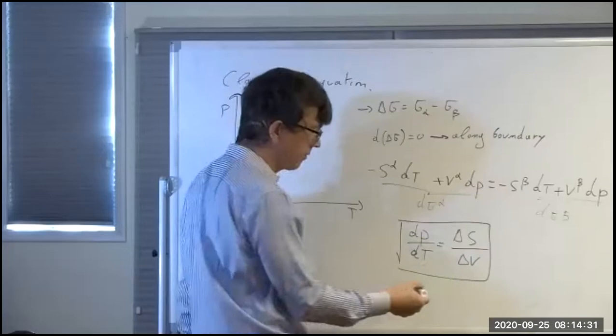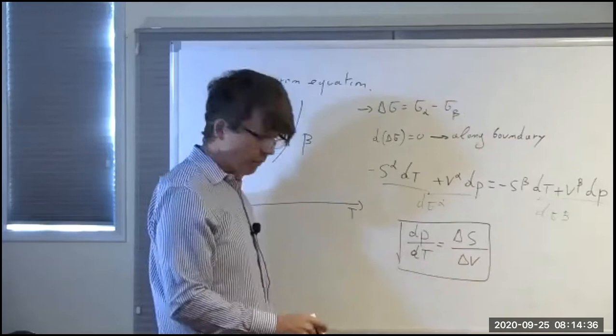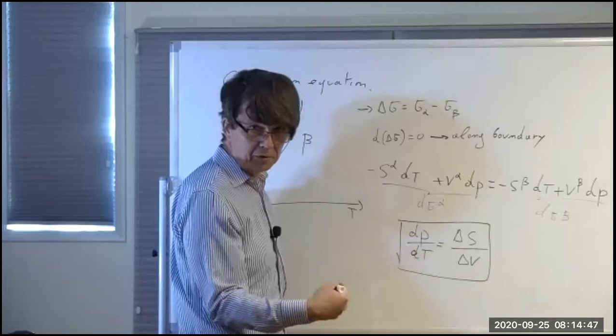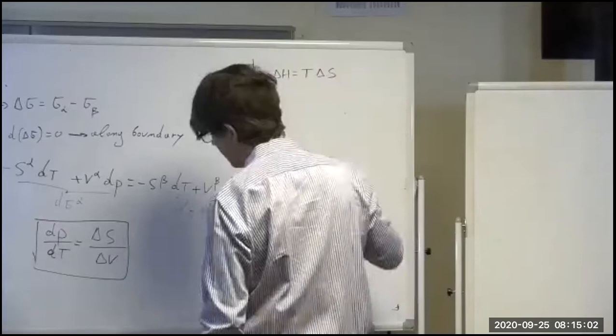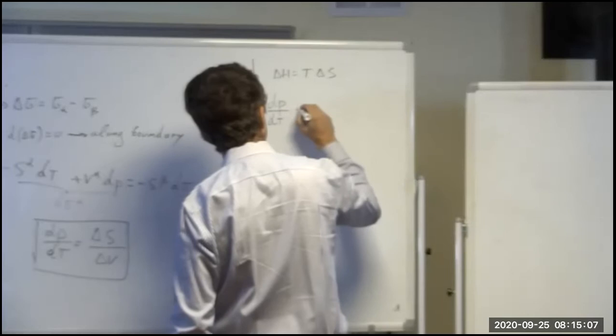So ΔS is s_beta minus s_alpha, and ΔV is v_beta minus v_alpha. This is the differential equation for the boundary. In general, it's a nonlinear differential equation because ΔS and ΔV themselves depend on T and P. You can also write it in a different form: since along the boundary ΔH = TΔS, you can write dP/dT = ΔH / (T ΔV). This form is often easier because heats and volumes of transformation are easier to find in experimental data.